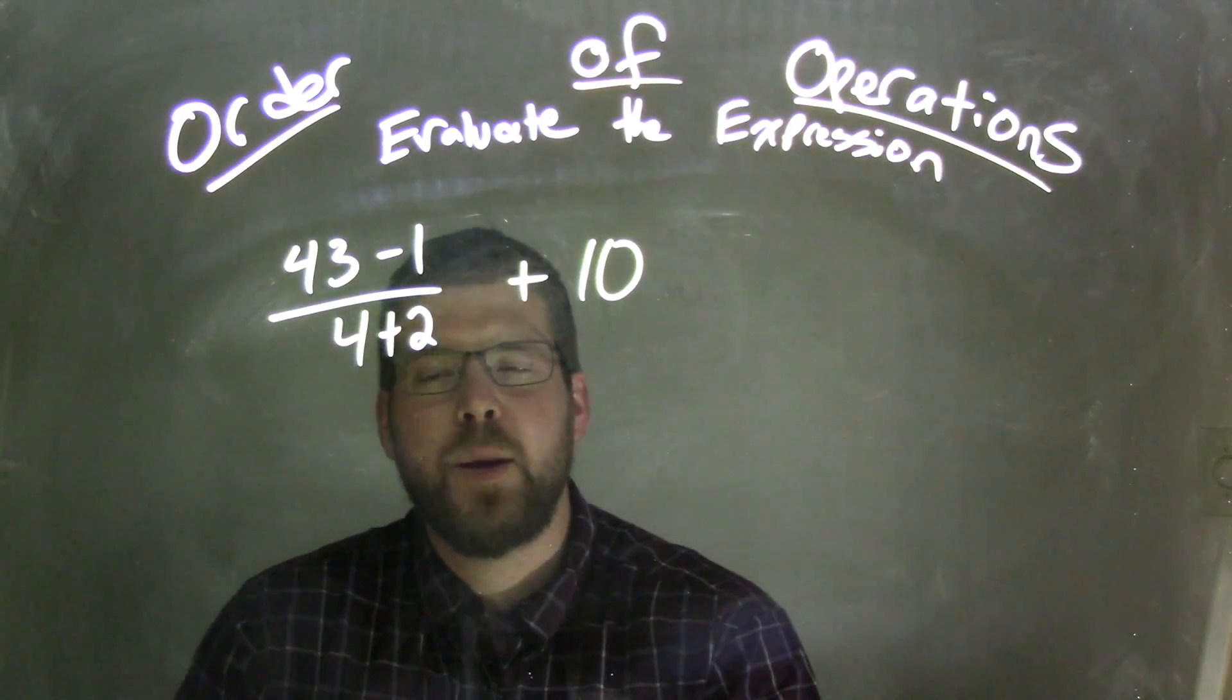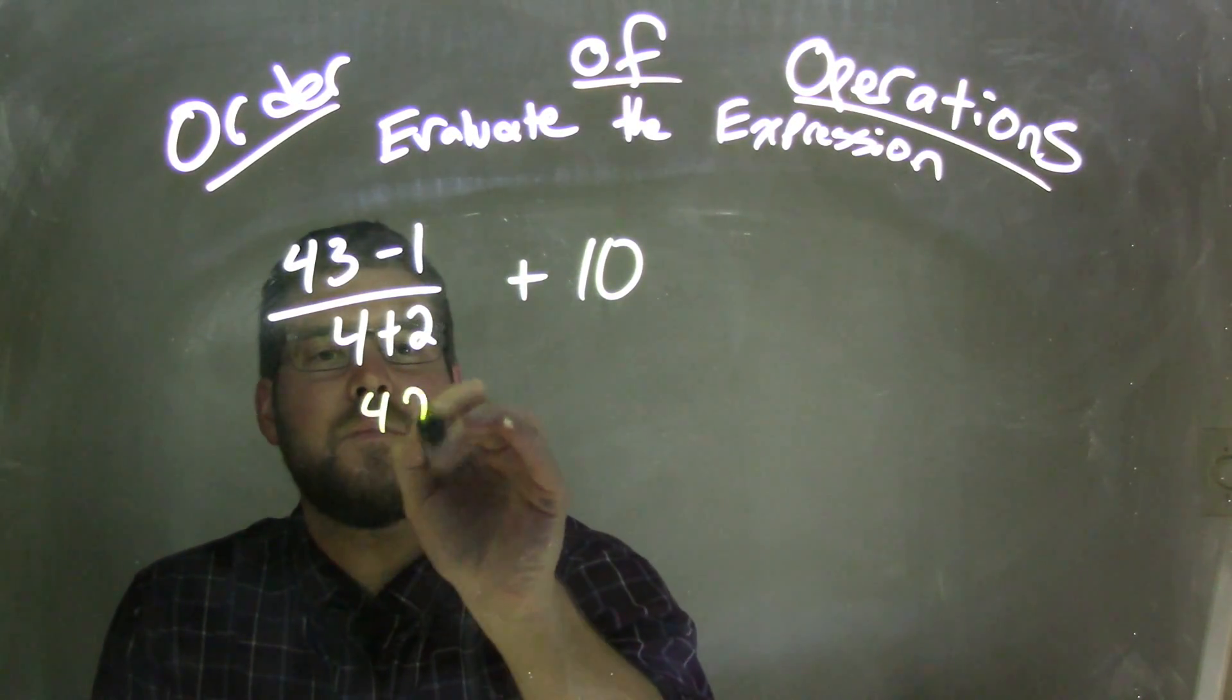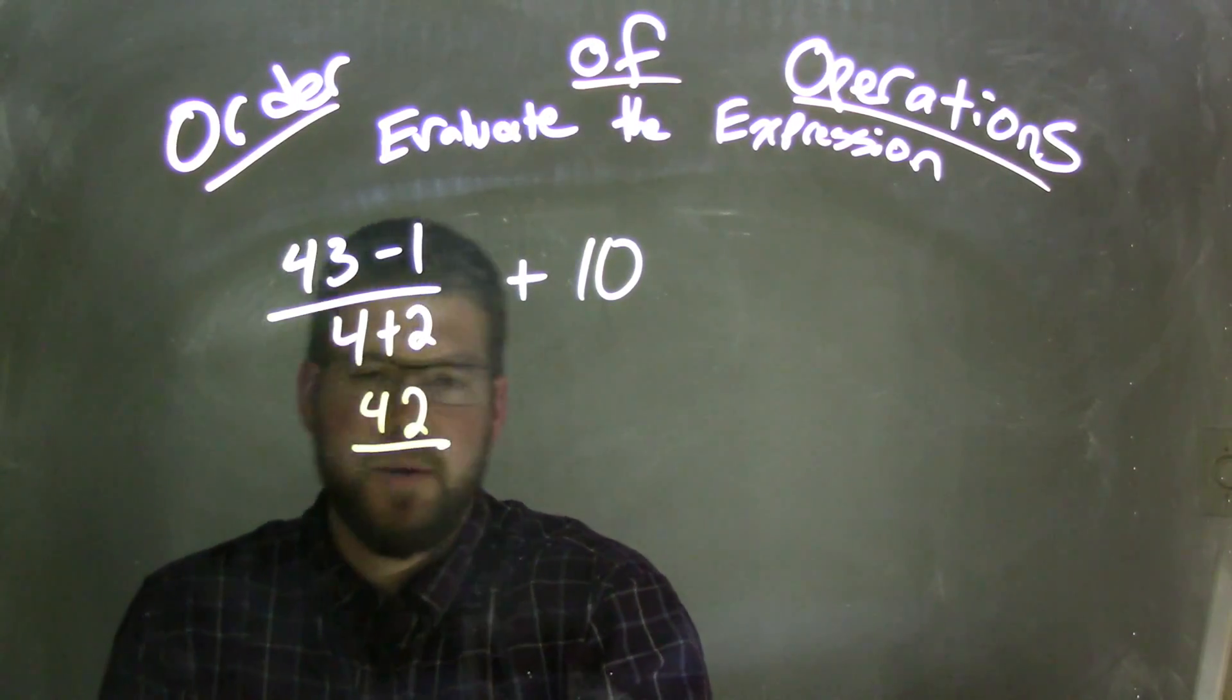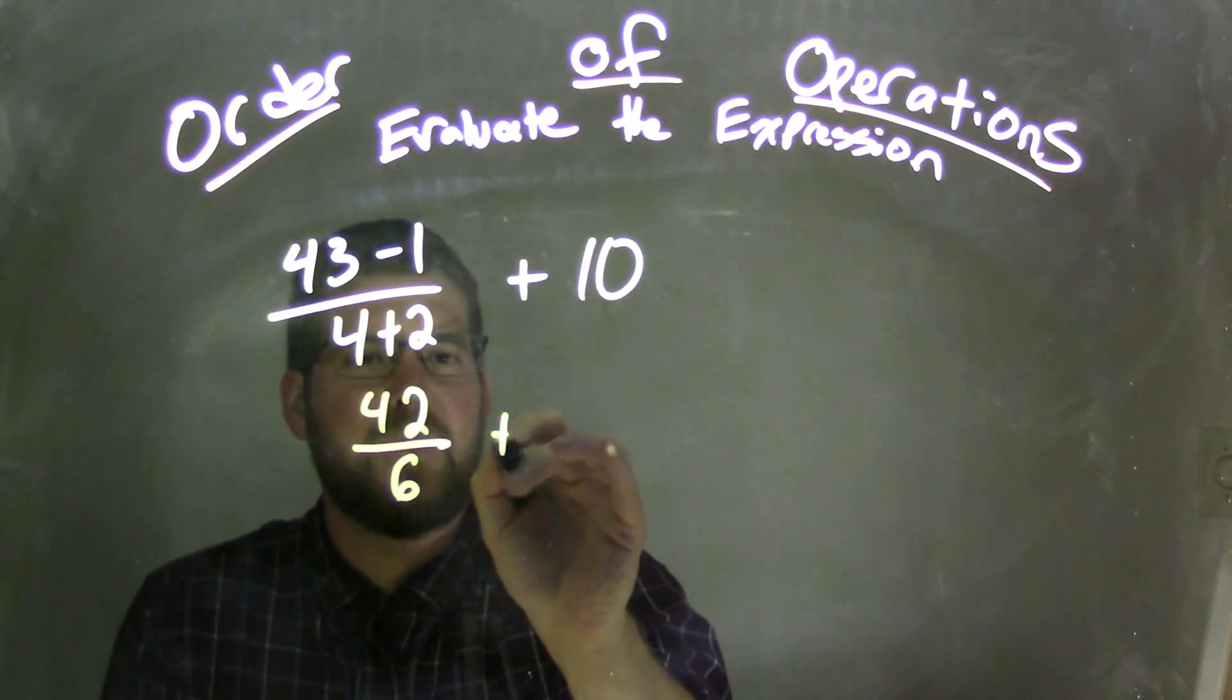So 43 minus 1 comes out to be 42, divided by 4 plus 2, which comes out to be 6 plus 10.